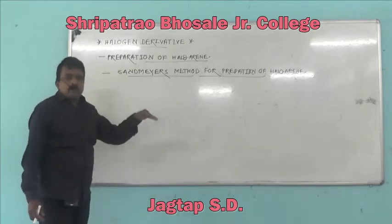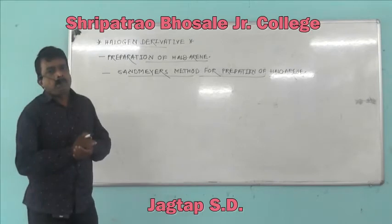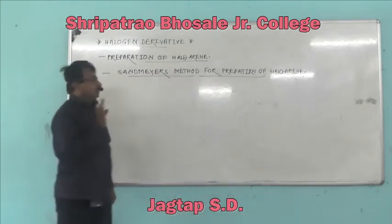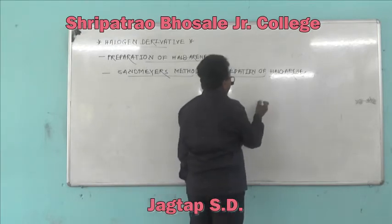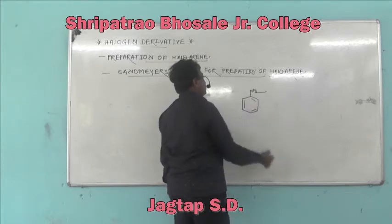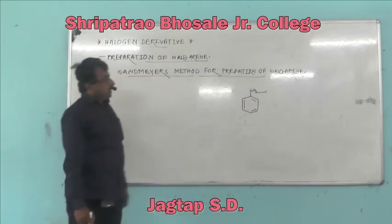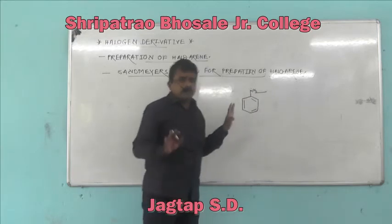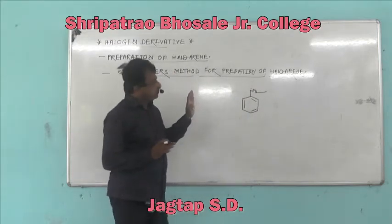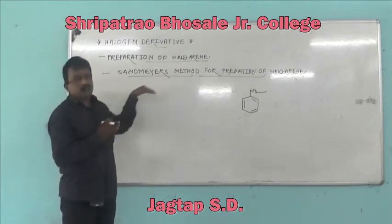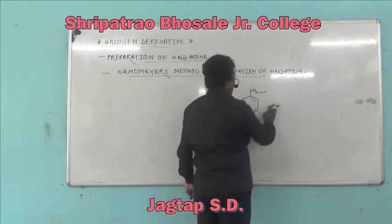In the second method, the starting material is benzene diazonium salt. Initially we are going towards the preparation of benzene diazonium salt. Benzene diazonium salt is prepared from aromatic amine, that is aniline — in which the amine group is directly attached to the aromatic carbon. Aniline is a primary amine, named as aniline or benzenamine.